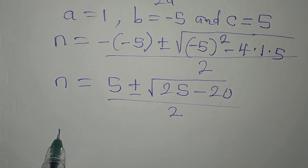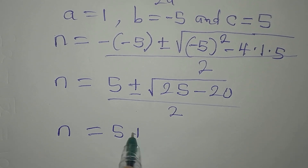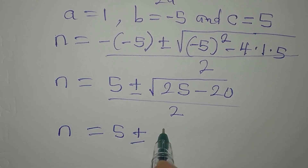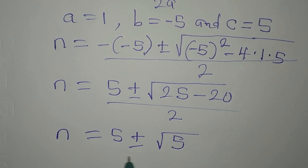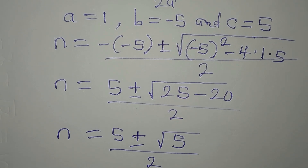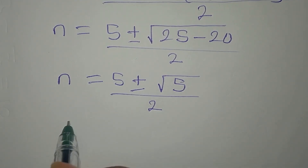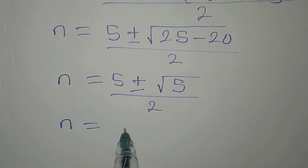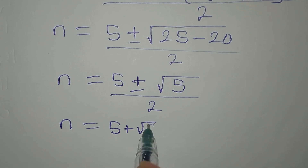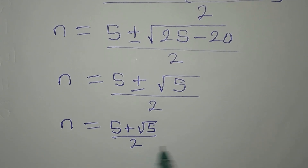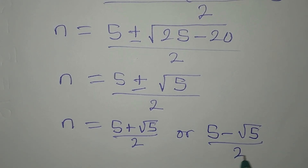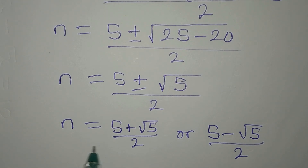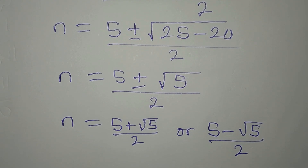N equals 5 plus or minus the square root of 5, divided by 2. This is a two-in-one solution: N equals (5 plus root 5) over 2, or N equals (5 minus root 5) over 2. For each value of N, we will get the corresponding value of M.